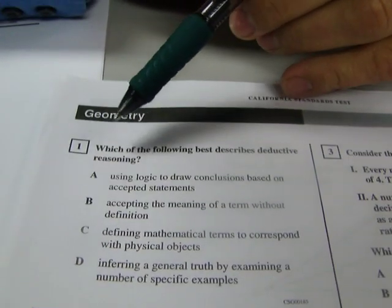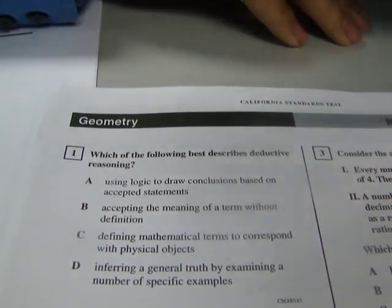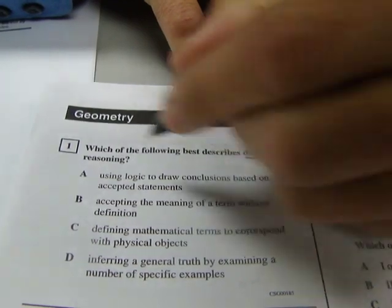This is problem 1. It says, which of the following best describes deductive reasoning? So we've got this word deductive. Deductive tells us that we're going to use logic, known information, to find new information. So let's find the one that sounds like that.